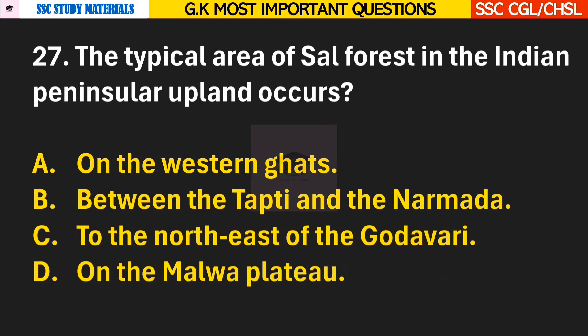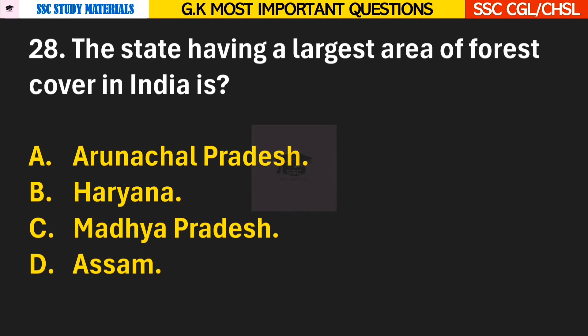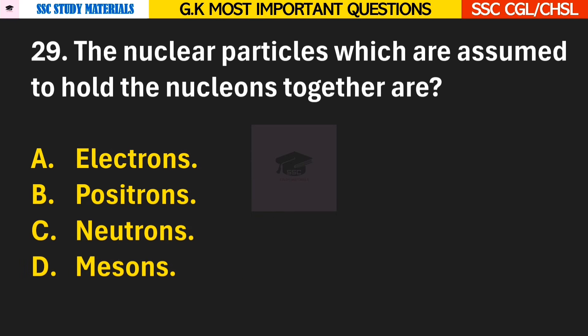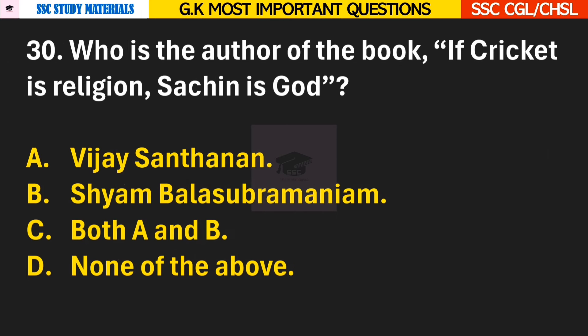Question 27: The typical area of sal forest in the Indian peninsular upland occurs? Answer B — between the Tapti and the Narmada river. Question 28: The state having the largest area of forest cover in India is? Answer C — Madhya Pradesh. Question 29: The nuclear particles which are assumed to hold the nucleons together are? Answer D — Mesons.